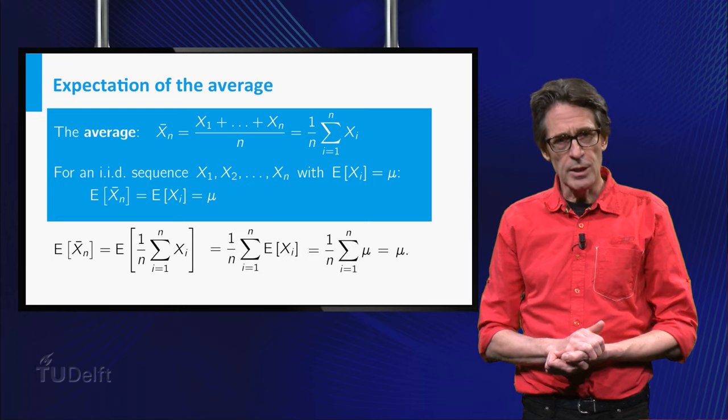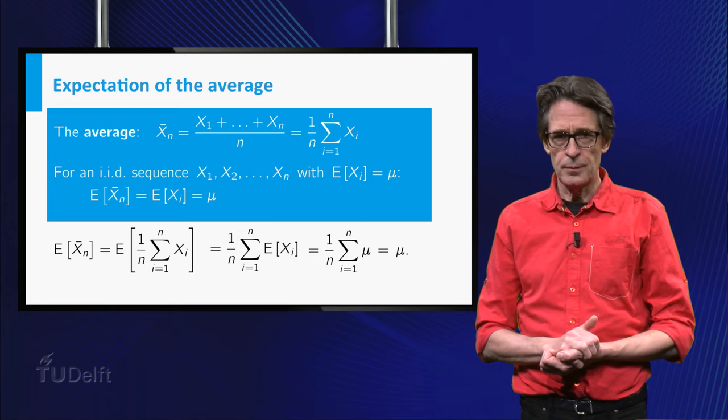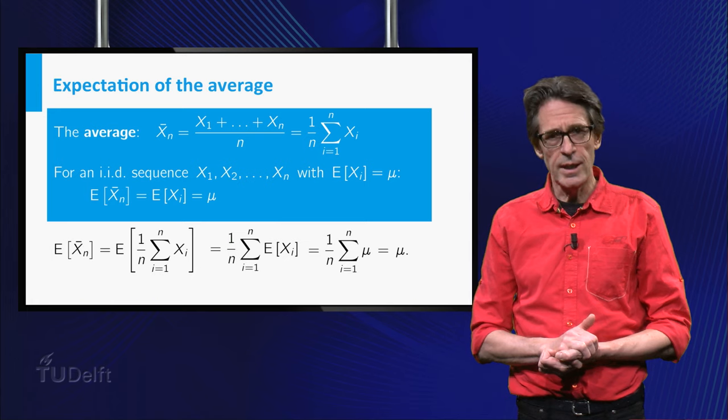At the second equality sign, the sum rule for the expectation is used. This rule holds even in the case of dependent variables.